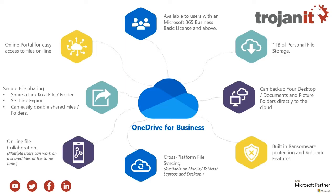I'll also run through the secure file sharing features. You can share a file directly from your OneDrive — all you're doing is sharing a link to the file, not sending the file itself, so you maintain control at all times. You can set the link to expire, giving someone access for just a week or two days, and you can also disable any shares you've set up. I'll show you how to manage sharing and how to disable those shares if necessary. There's also an online portal — in addition to your laptop or PC, you can access your OneDrive from any web browser.